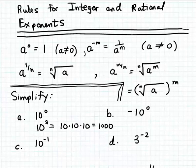That's fairly easy to remember — when the exponent is a positive whole number, it simply tells us how many times to use the base as a factor. But now suppose we want to simplify 10 to the zeroth power, where zero is an integer. How do we simplify that expression?